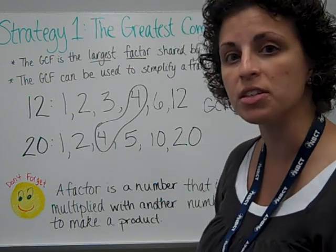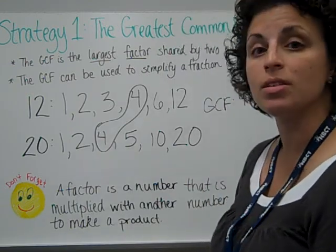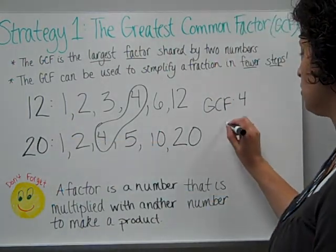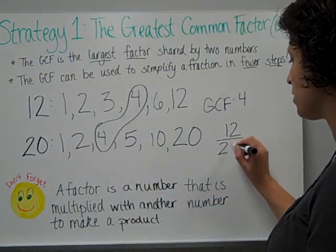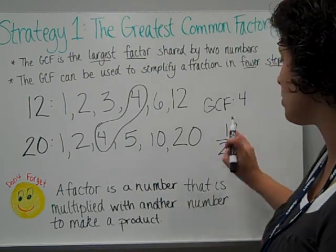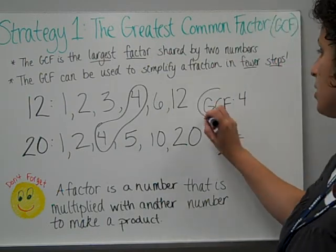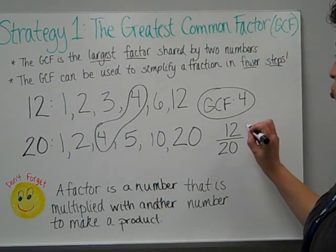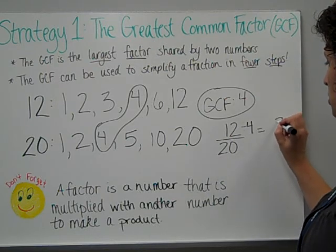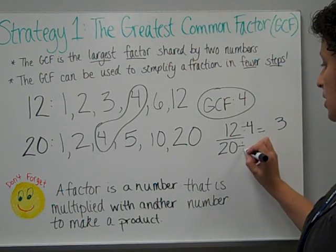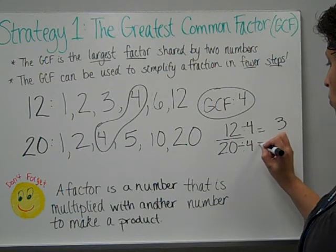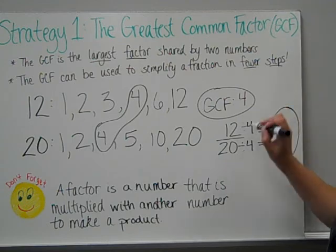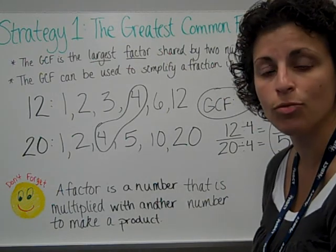Now the reason that I find that greatest common factor is to help me simplify or reduce the fraction. So these were the parts of the fraction. It would have been 12 20ths as a fraction. If I now divide both parts by this greatest common factor, then I will have the fraction in simplest form. So 12 divided by 4 is going to be 3. And 20 divided by 4 is going to be 5. So 12 20ths is the same as 3 fifths, and this is in simplest form.